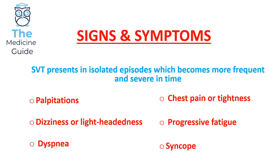A supraventricular tachycardia — the clue is in the name — means these patients are in a state of tachycardia, so their heart rate will be greater than 100 beats per minute.